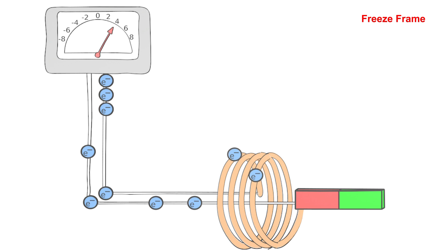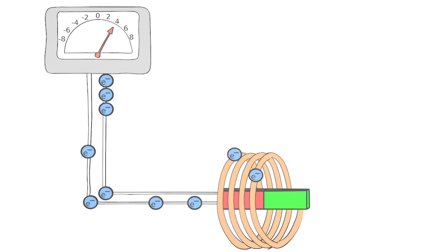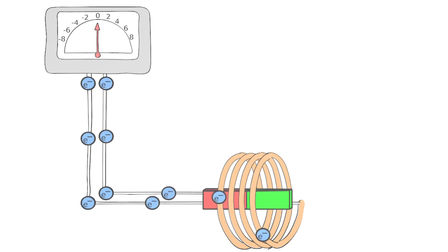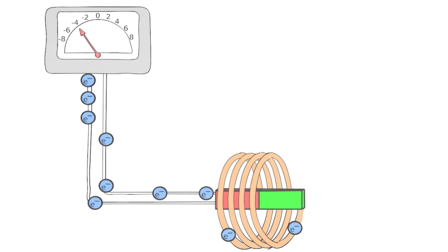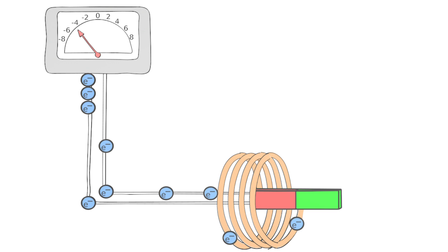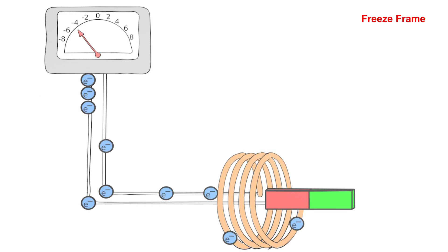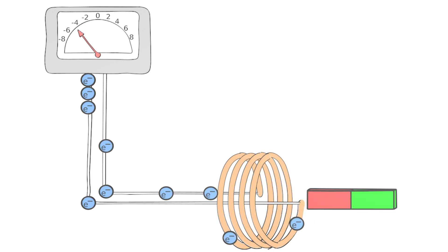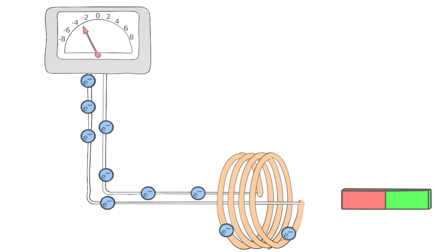As soon as the bar magnet is no longer moved, all free electrons are distributed evenly again. If the bar magnet is removed from the coil, the free electrons in the coil flow in the opposite direction. Now there are more free electrons at the end of the left power cable. In this case, the pointer of the voltmeter points to the left. Only when the bar magnet stops moving will the free electrons be evenly distributed again.